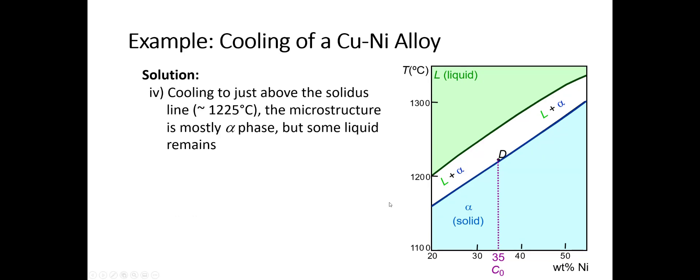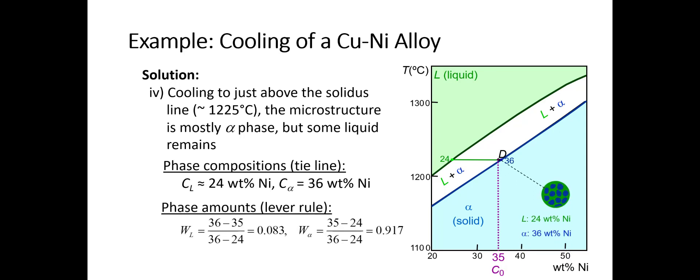Now let's cool down to 1225. At 1225, we're just above the solidus line, so now we're primarily alpha, very little liquid, but some liquid still remains. We apply the same procedure as we've done previously. We draw our tie line and see that the phase composition of the liquid is 24 weight percent nickel. The phase composition of the alpha is 36 weight percent nickel. So again, decreasing like we had said. We apply the lever rule to get our phase amounts, and we see that the weight fraction of the liquid is about 8 percent, and the weight fraction of alpha is about 92 percent. Now we're starting to grow these blue alpha grains very large.